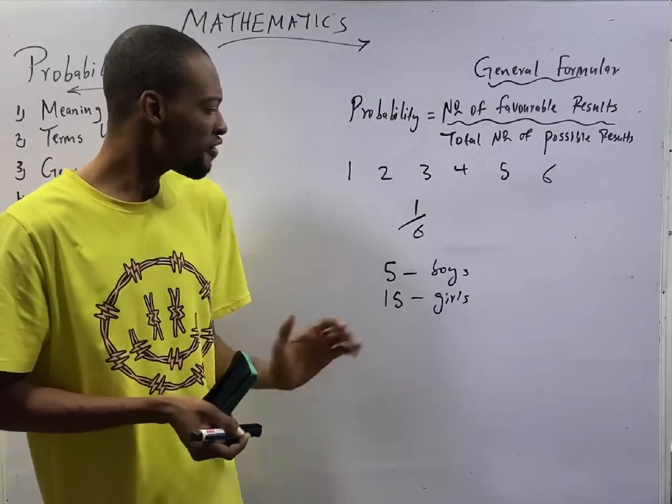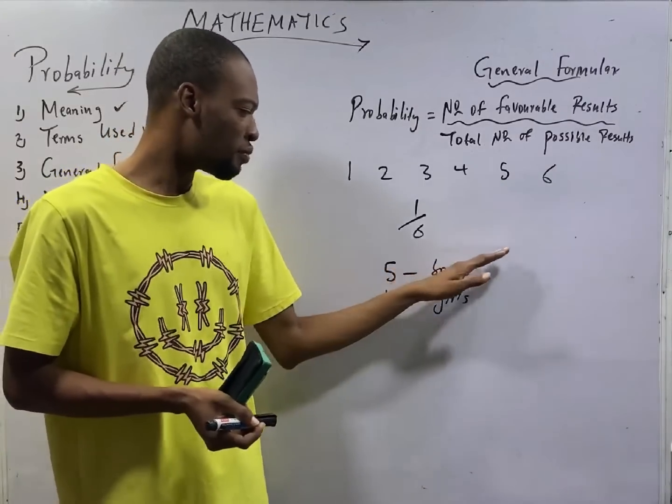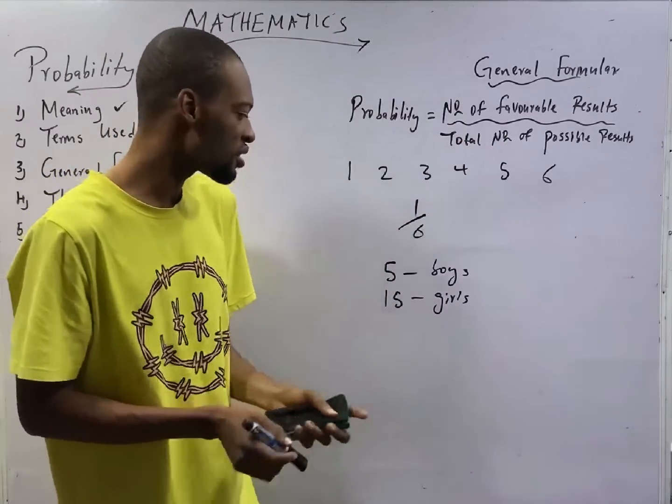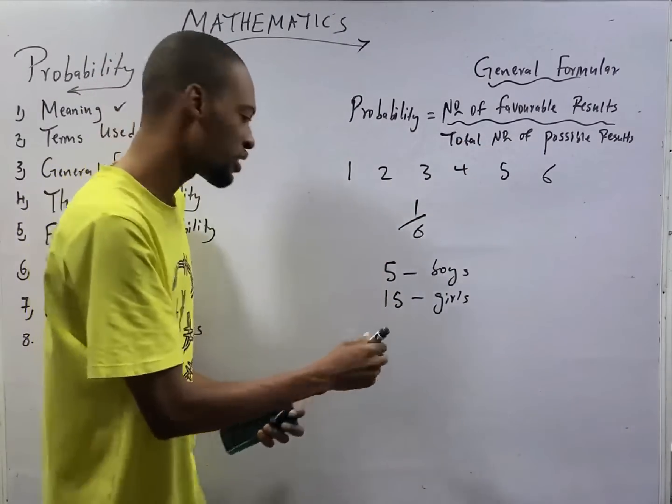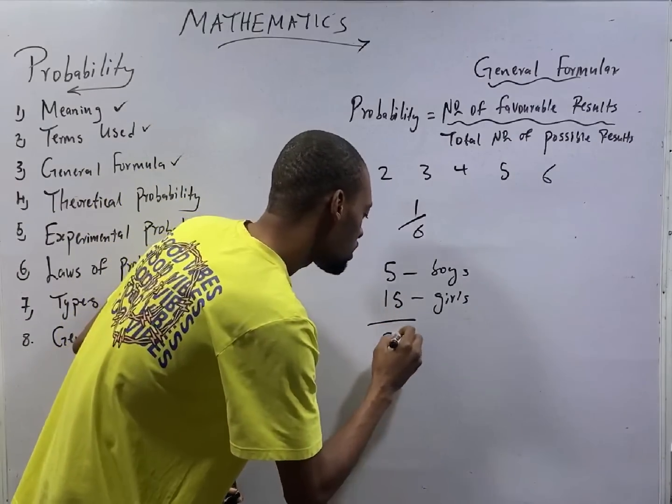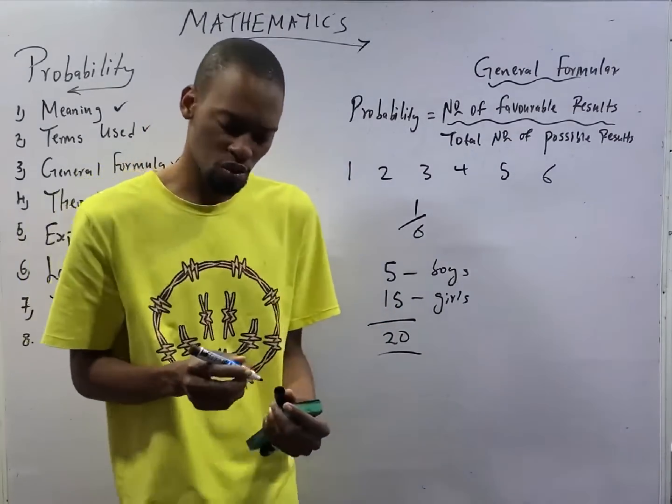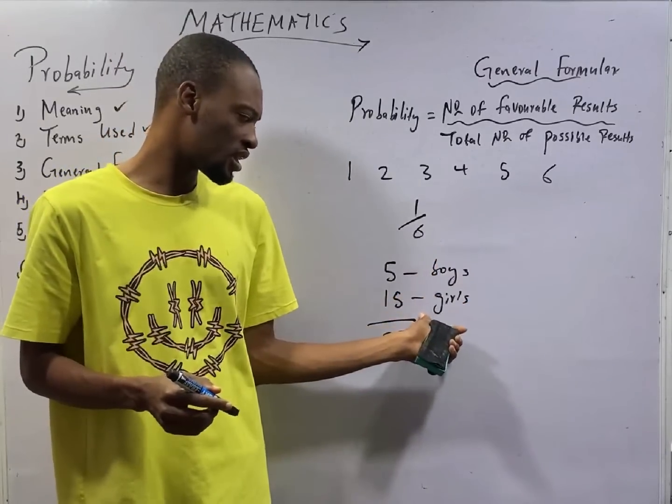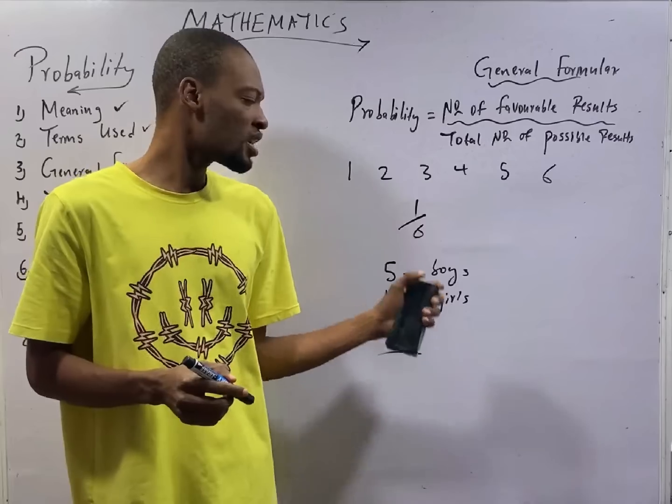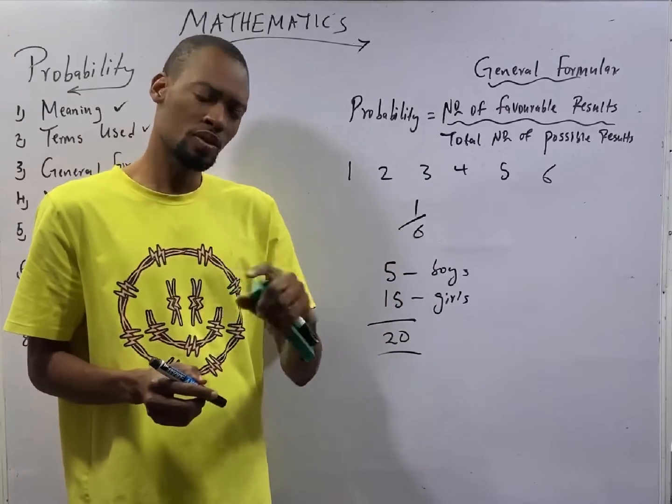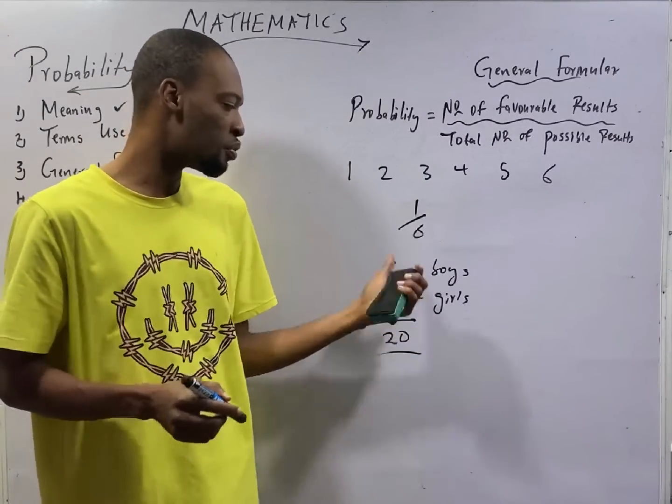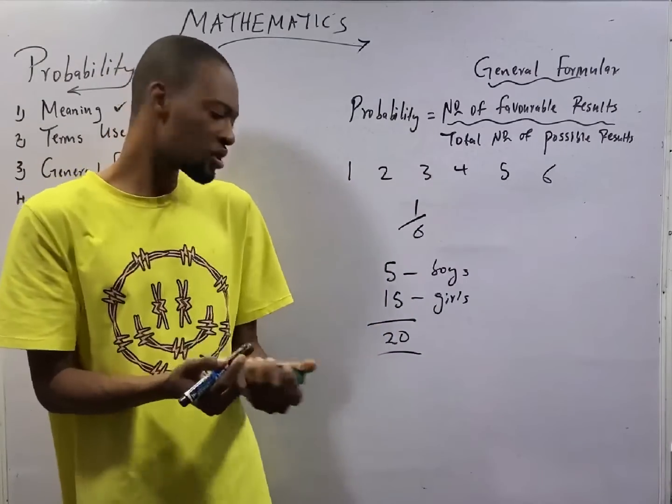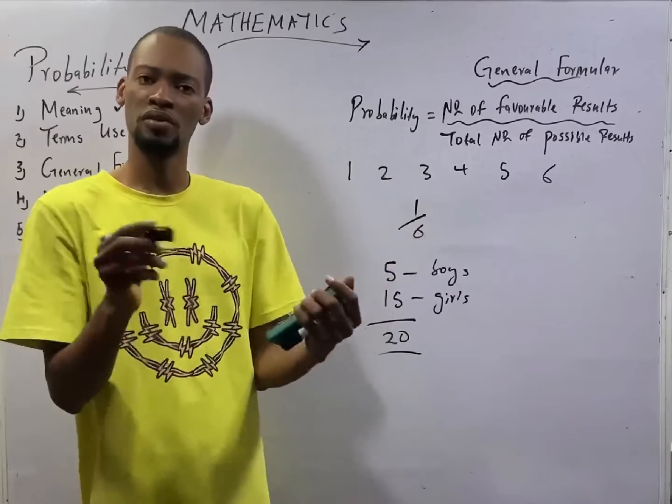Now, if we have 5 boys and 15 girls, the total number of possible results is 5 plus 15. That is 20. True or true? True. Now, since we have 5 boys and 15 girls, if a student is picked at random, the chance that this student is a boy is 5 out of 20. 5, number of students, 20, total number of students.